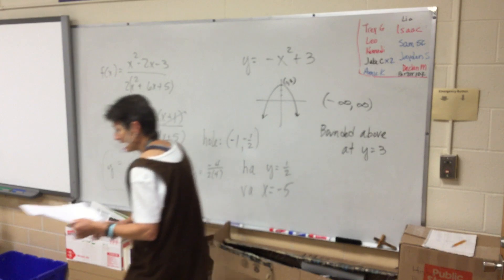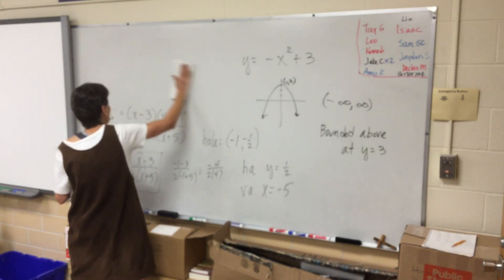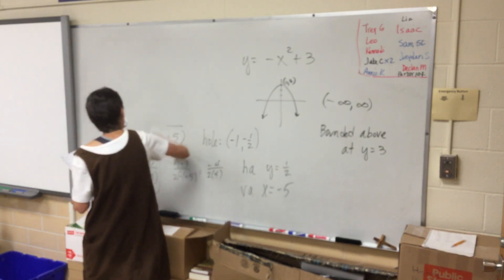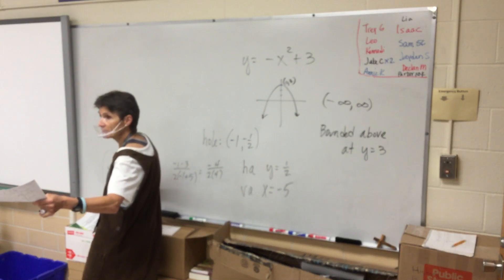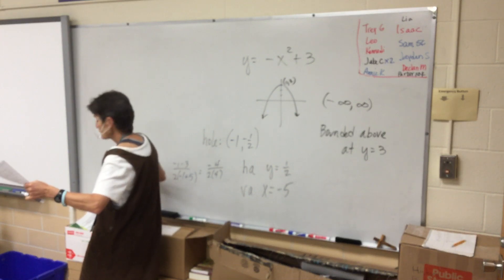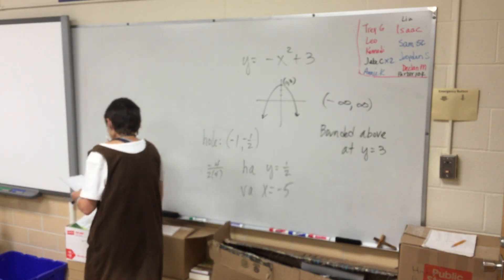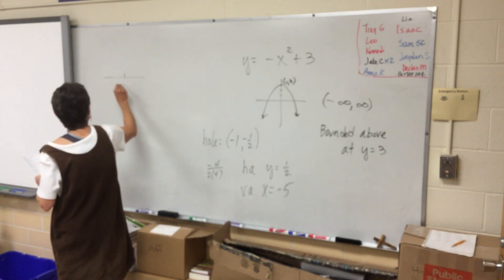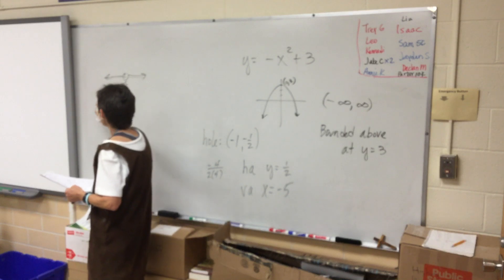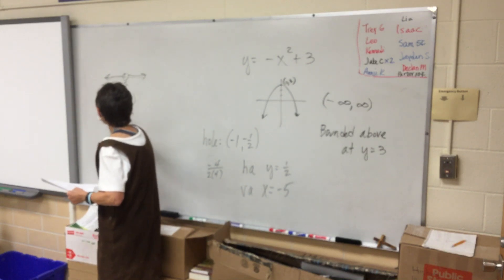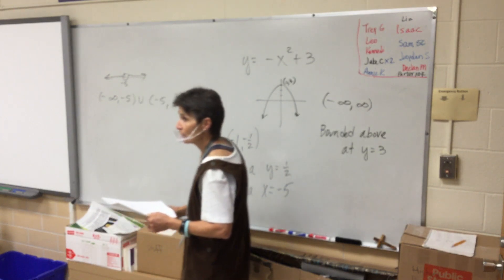Tell me about the domain of number 8. Just the domain. Take a look at it. What can you tell me about the domain of number 8? x cannot be negative 5. Right, everyone? So if x can't be negative 5, you have to write that as an interval. So think about your number line. What you're telling me is all that and all that. So negative infinity to negative 5 or negative 5 to infinity. That's your domain.